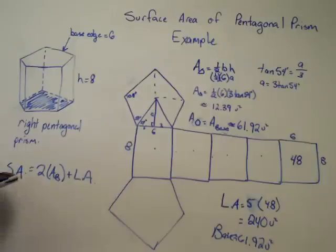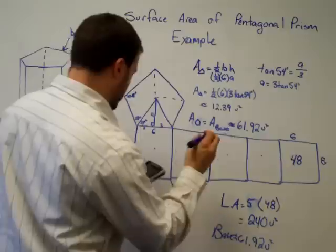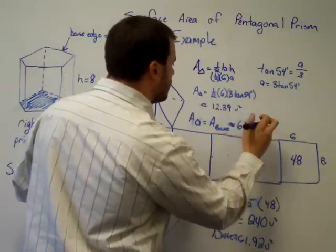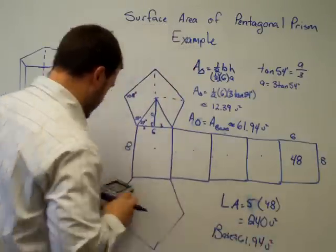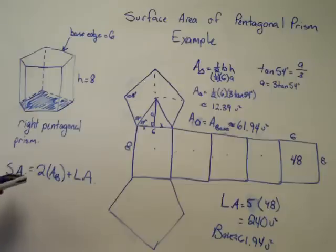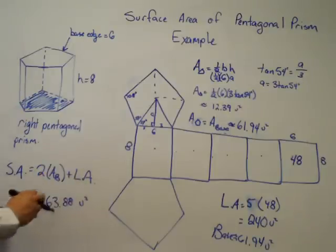So our total surface area is going to be two times the area of the base, plus the lateral area. And that's two times approximately 61.94, plus 240, or approximately 363.8 units squared.